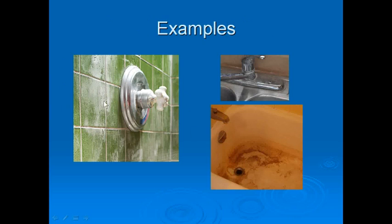Some examples: this is some calcium built up on your bathroom tiling. Water evaporates and leaves the calcium behind. Here's an example of some rust stains from your water in the bottom of your tub. And here you can see again some calcium built up on your sink and faucet from evaporating water leaving the calcium behind.